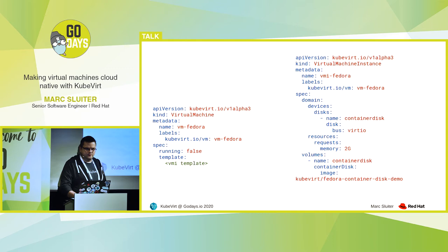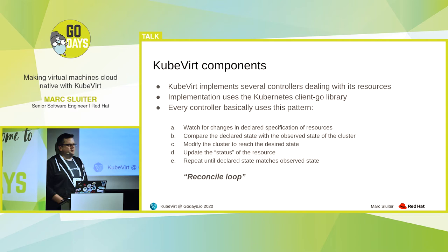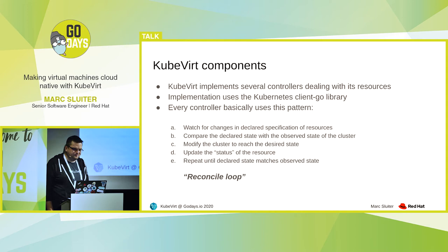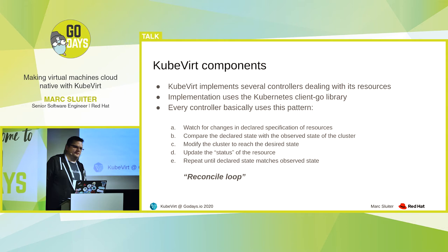So what components do we have in KubeVirt? It's a bit similar to the Kubernetes components. We need to implement controllers which deal with our VM and VMI resources. The implementation is done with the Kubernetes client-go library — there is also a controller-runtime library available nowadays which makes this even easier, but that didn't exist yet when we started. And every controller basically uses the reconcile loop pattern: it watches for creation, updates, or deletions of VM and VMI resources, then compares the declared state with the actual state of the running cluster, and modifies the cluster to reach the declared state.